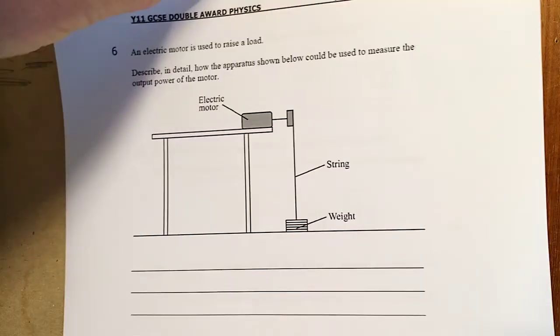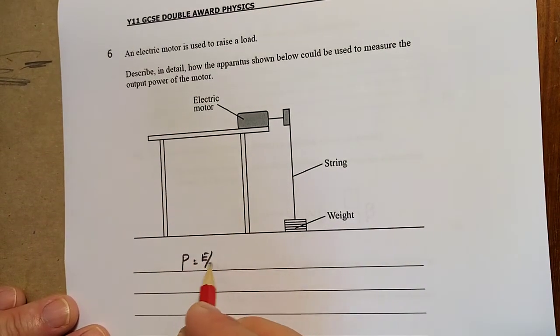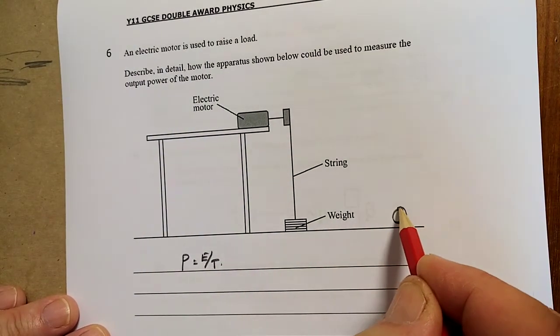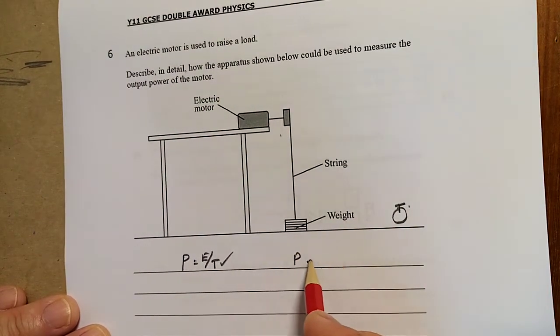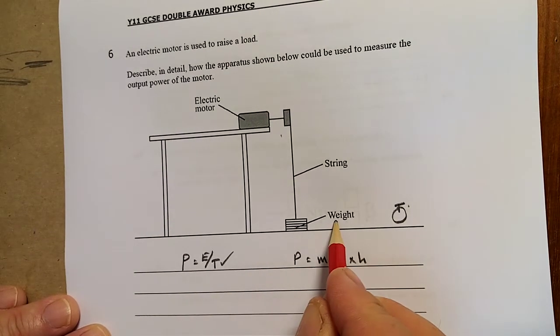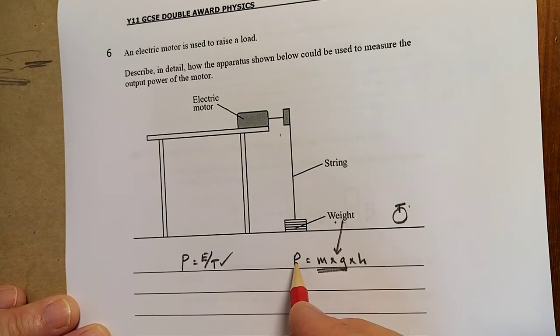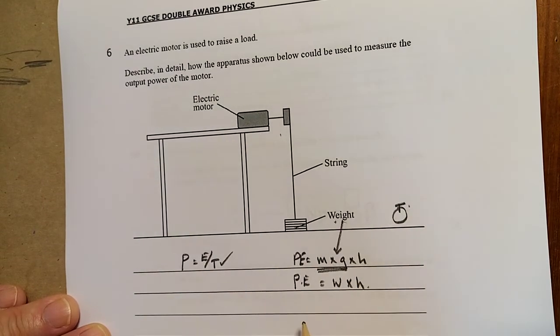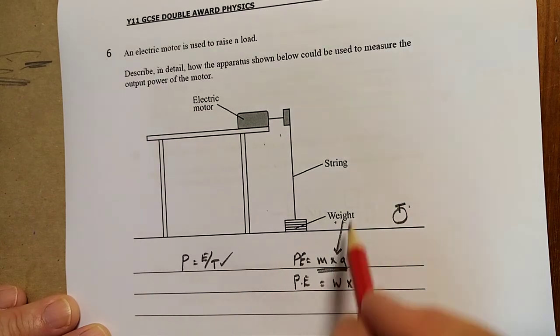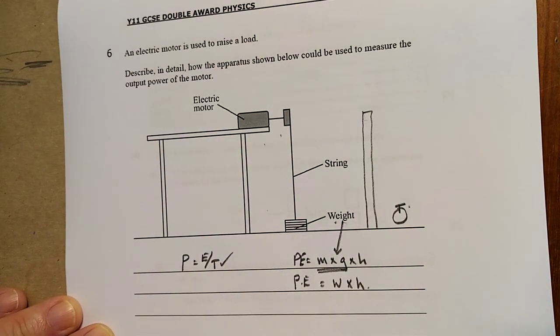An electric motor is used to raise a load. Describe in detail the apparatus that could be used to measure the power. Remember power equals energy over time. So you're going to record the time with a stopwatch. That'll record the time. The energy, well the energy is going to get potential energy, m by g by h. So you're going to have the weight. They talk about weight there. And potential energy is the weight by the height. Know the weight, record the height. How do you record the height? That would have to be a meter rail. And the meter rail would measure the height.